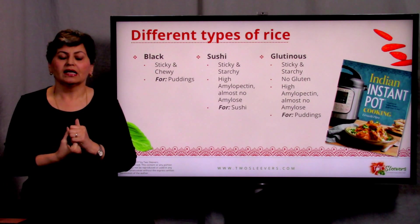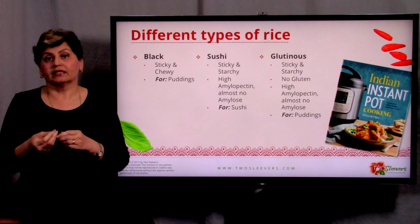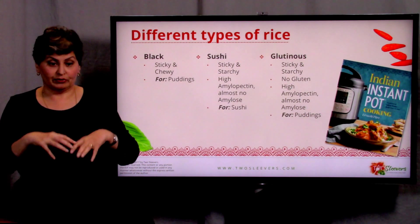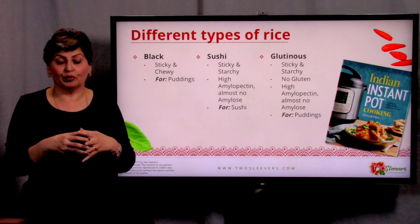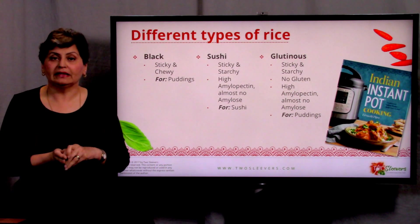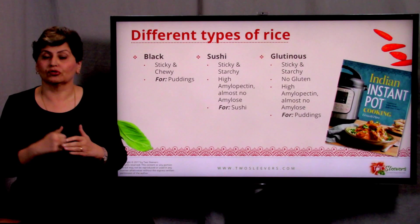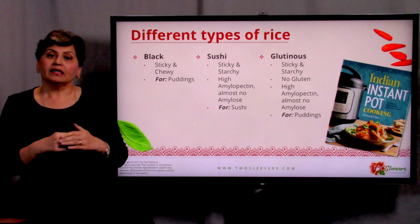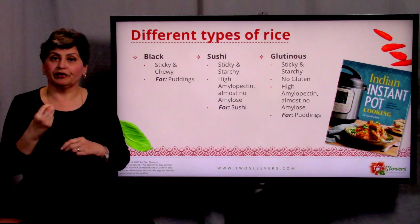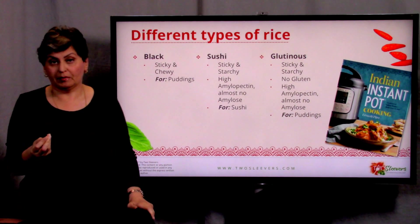Glutinous rice, despite its name, has no gluten in it — glutinous in this context simply means sticky. So when you're making a Thai coconut rice with mango, that little Thai pudding, or a coconut pandan rice, you would use glutinous rice. I'm going to post all of these recipes on the twosleevers.com blog. This rice has very high amylopectin and almost no amylose, so it's very sticky and the grains tend to clump together — very different from basmati.